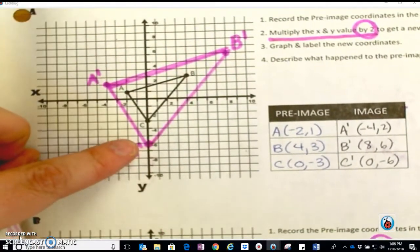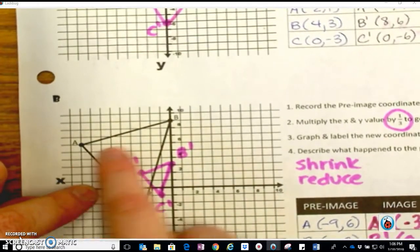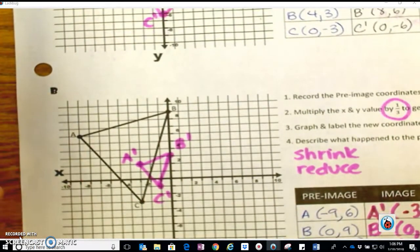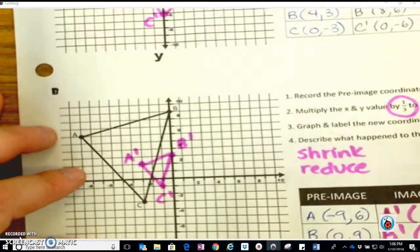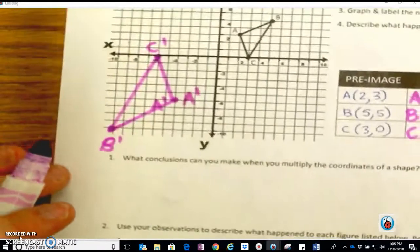Now, when we multiplied it by a fraction, it looks like it just kind of almost a translation in a way, except it shrunk. Everything kind of slid over and got smaller.